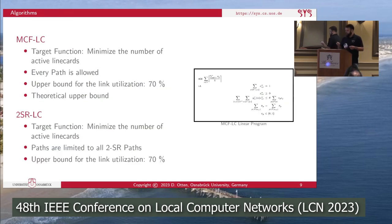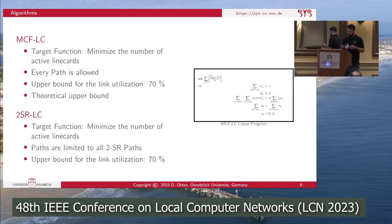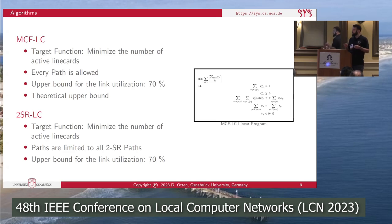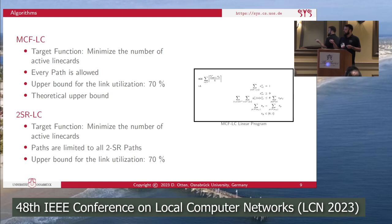We implemented both approaches using integer linear programming. The first algorithm is the original MCF-LC linear program — the NP-hard version — which yields a theoretical upper bound for the number of inactive line cards achievable across the network. We set the link utilization upper bound to 70%, to leave room for sudden traffic spikes and resiliency capacity. The second algorithm is the 2SR version of MCF-LC, restricted to the solution space of all two-segment-routable paths — that is, concatenations of two shortest paths.